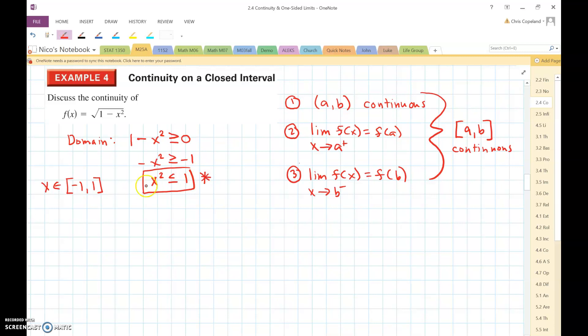For example, if I pick two, if x is equal to two, two squared would be four, is four less than or equal to one? No. If I take negative two, negative two squared is equal to four, four is less than one, no, that would also be false. So this is the domain.